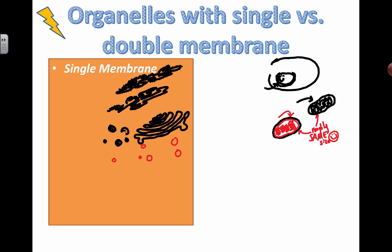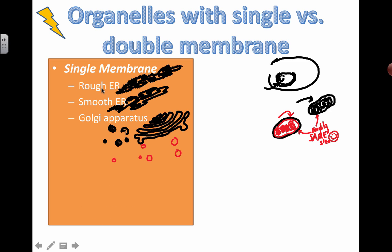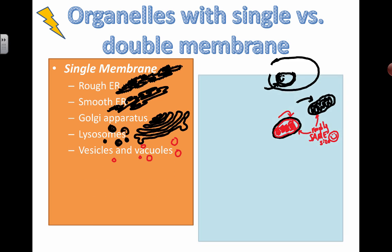One more thing to look at is a chart that summarizes which organelles have a single membrane and which have a double membrane. A single membrane means a full phospholipid bilayer — not half of one — like what you'd expect at the plasma membrane surrounding the cell. A double membrane is when you have two full phospholipid bilayers. The single membrane organelles are the rough ER, smooth ER, the Golgi apparatus, lysosomes, and vesicles which pinch off the Golgi apparatus.